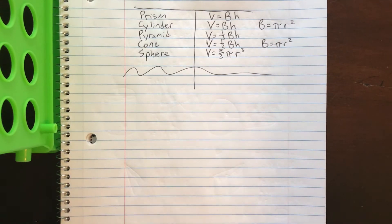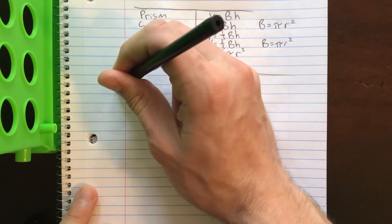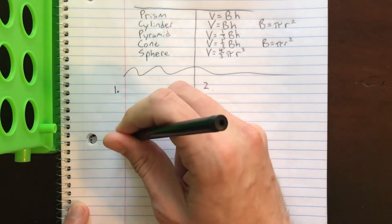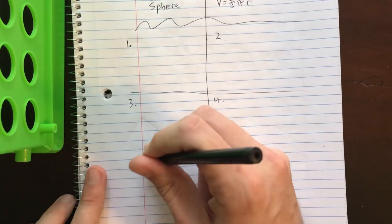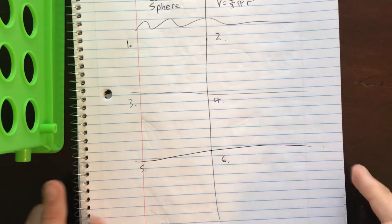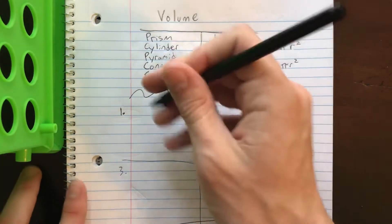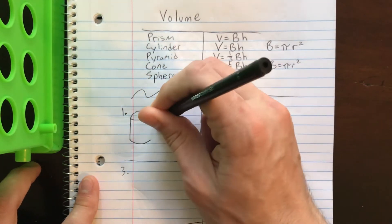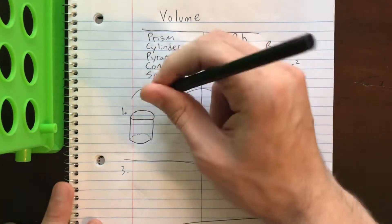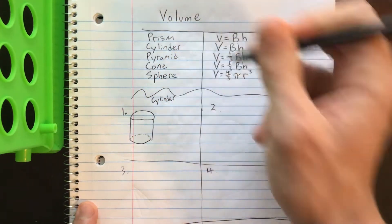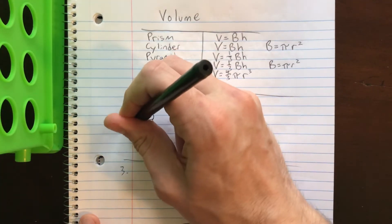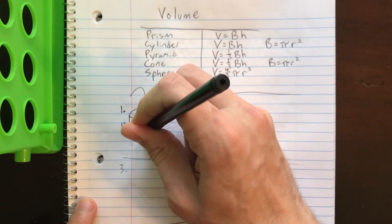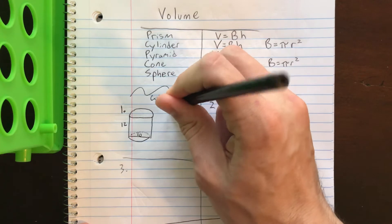Let's dive into some examples here. I tried to make some that are going to be very similar to the ones you'll see on your assignment. So let's start with this one — this is a cylinder. Let's throw down some numbers: the height is 12 and the distance across is 10. Now, the volume of a cylinder is big B times H where big B is pi r squared.